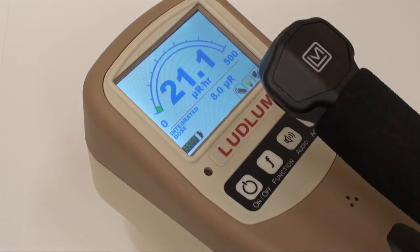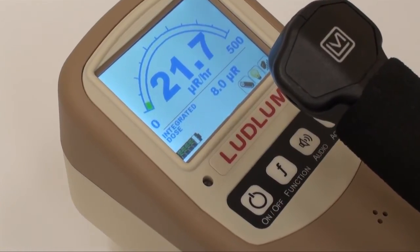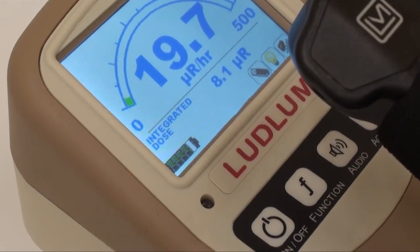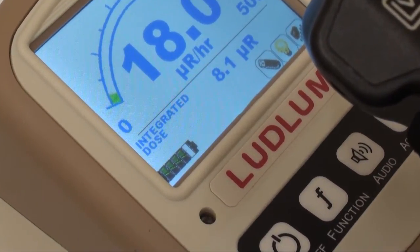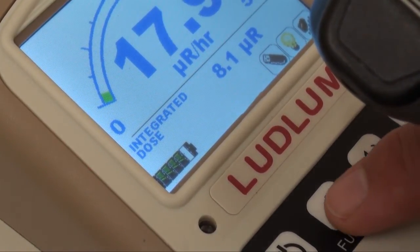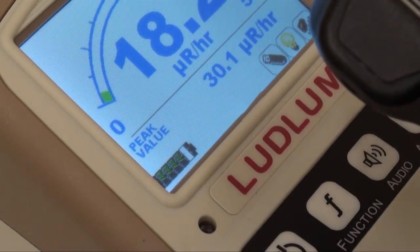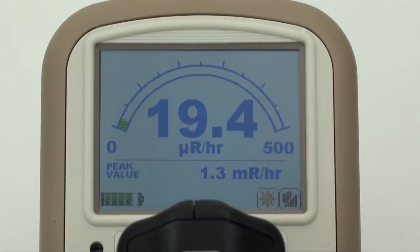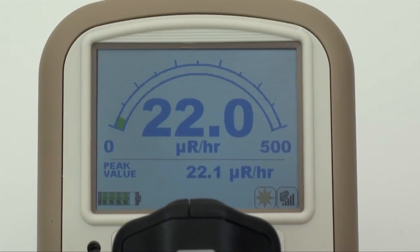In addition to the primary radiation readout, the 9DP can simultaneously display another value of the user's choosing. Pressing the function control button toggles a secondary measurement readout between the integrated dose or peak rate value. Both functions are running independent of whether or not they are being displayed and can be reset to zero any time the instrument is powered on or by manually pressing the reset button.